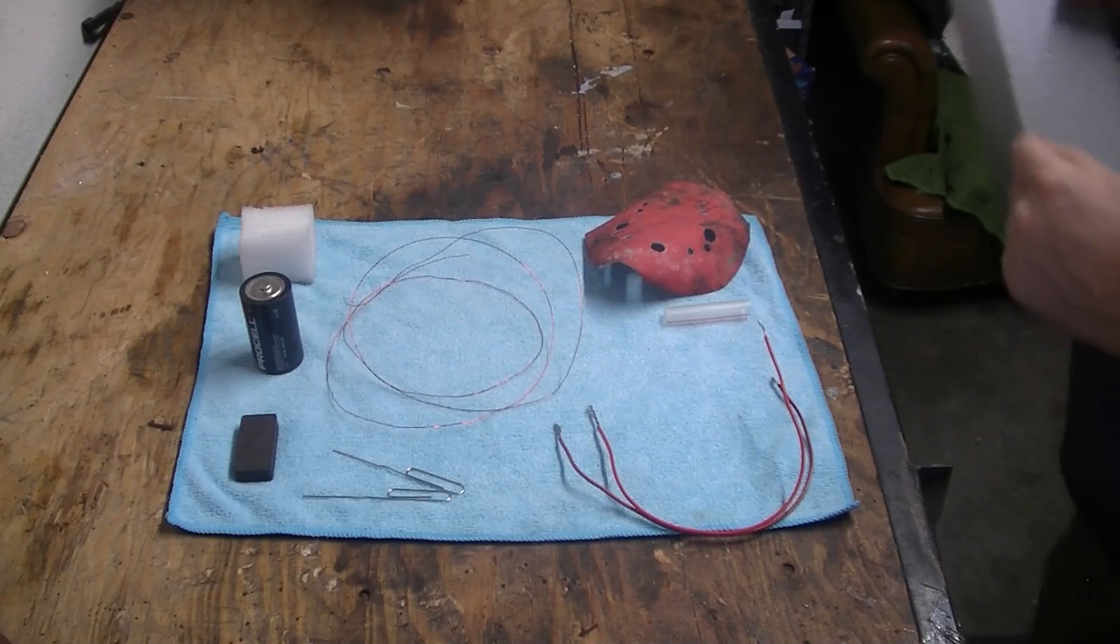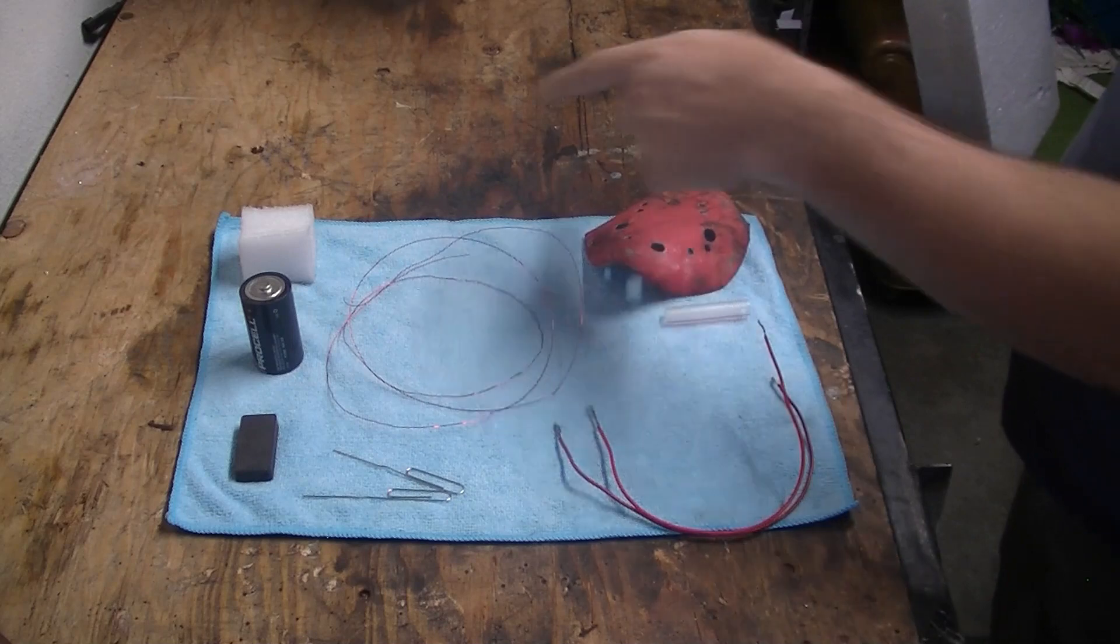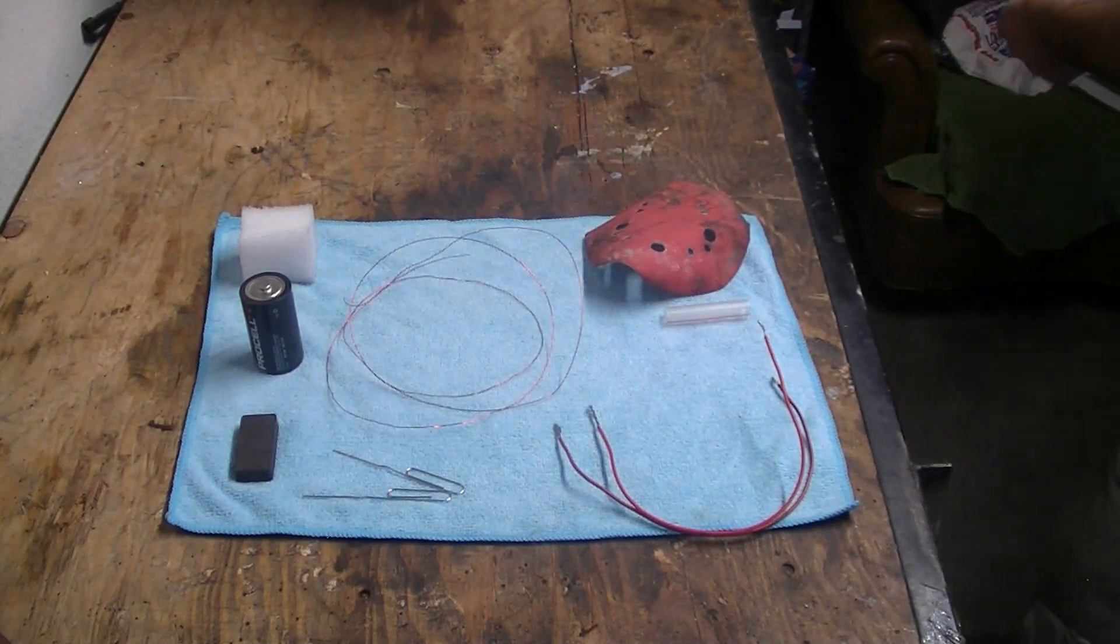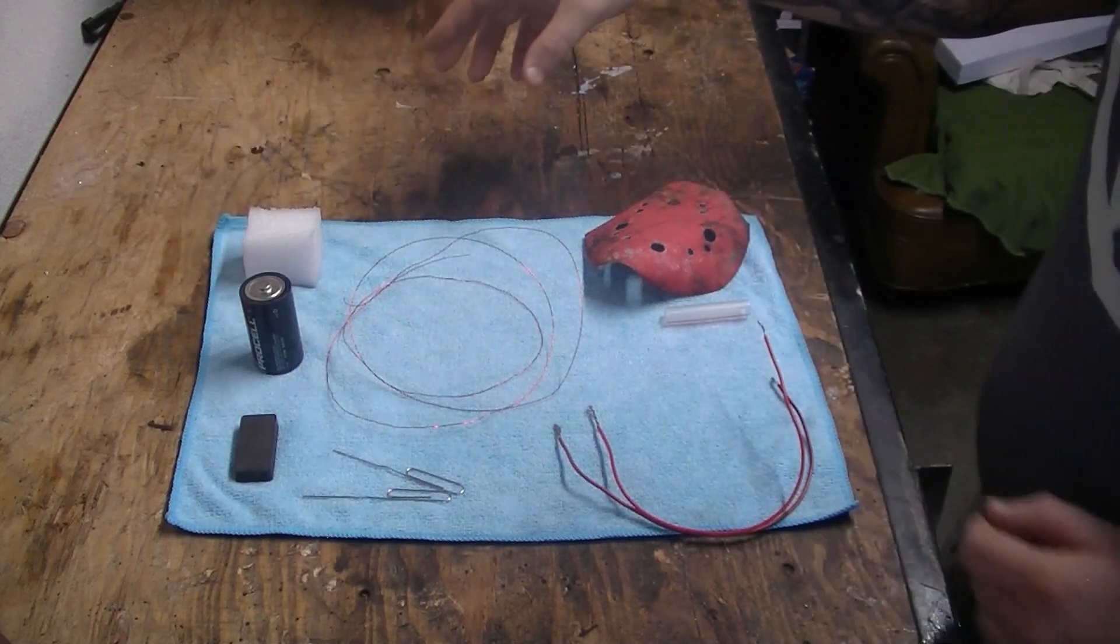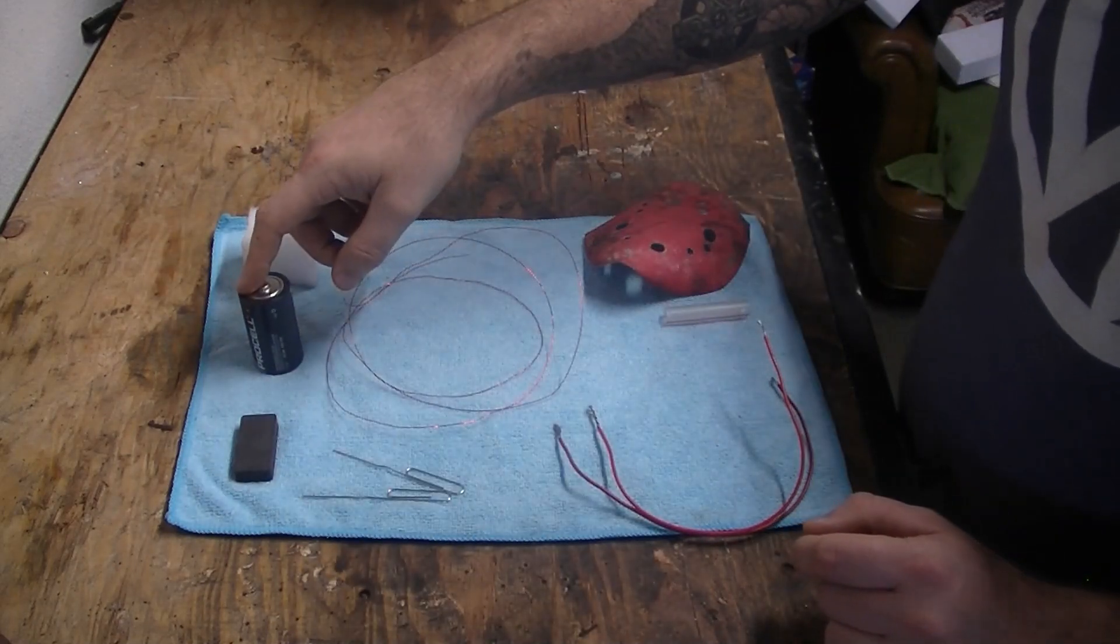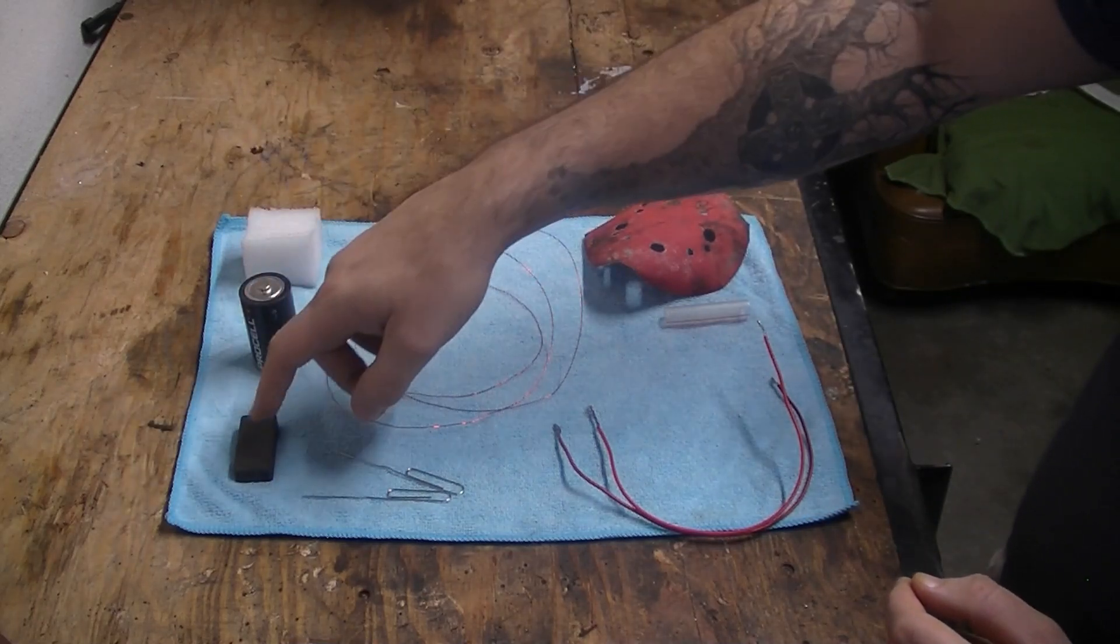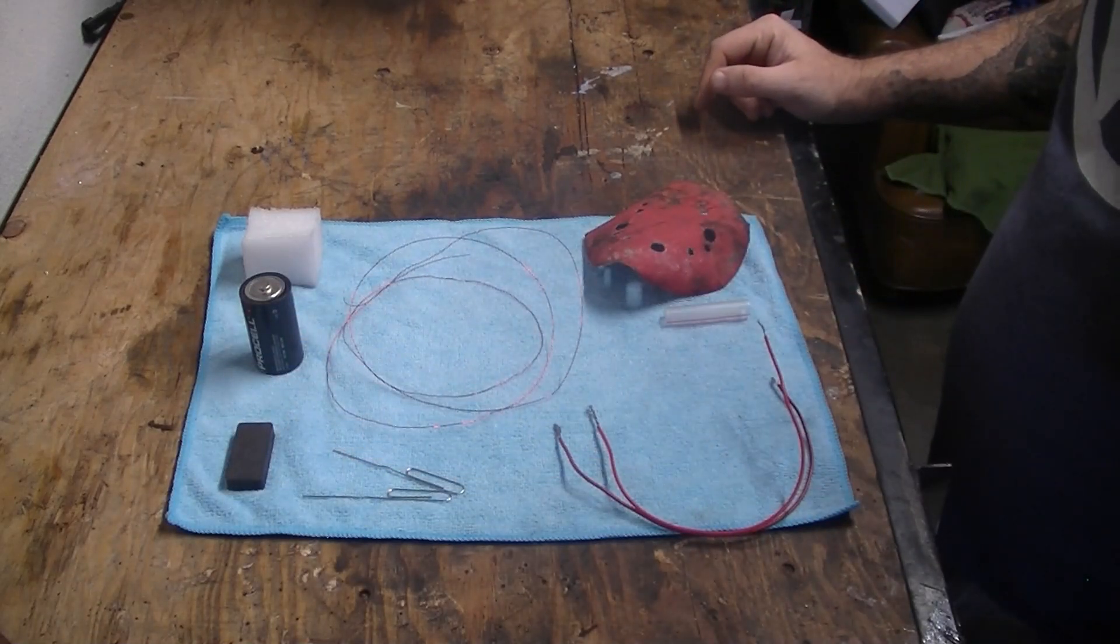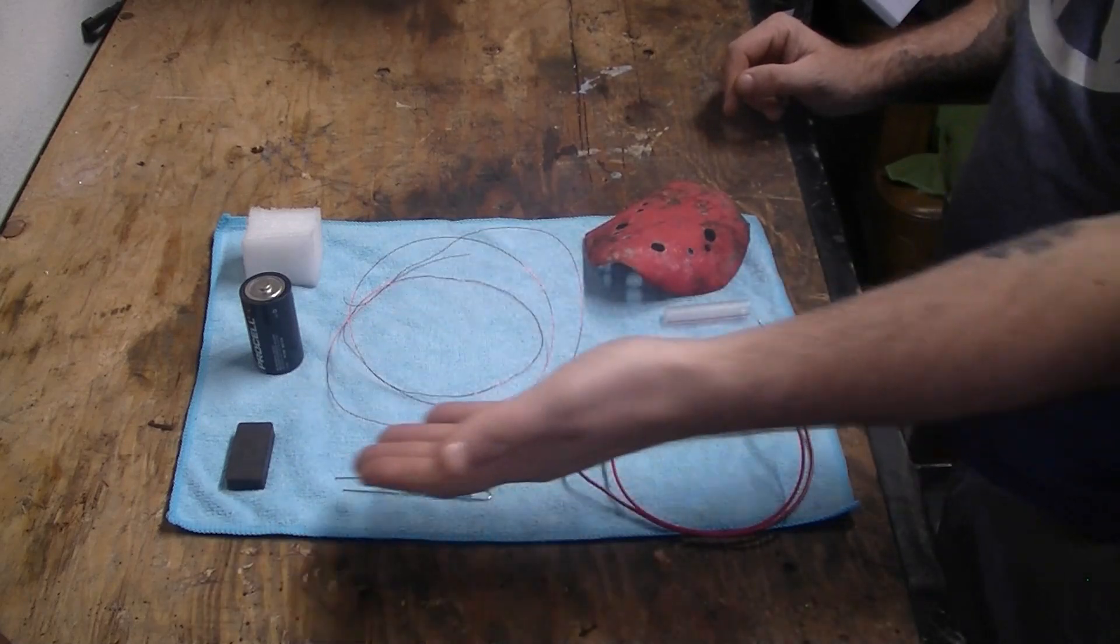Alright, you're looking at everything that you're going to need to make a small electric motor at home. Starting with the styrofoam, you can use any type of styrofoam you have laying around from packages or whatever, but you need at least a little rectangle of it. You're going to need a battery, D-cell works well because it lasts a long time. You're going to need a magnet, the stronger the magnet the better the effect is going to be. You will need two paper clips unbent as you can see.